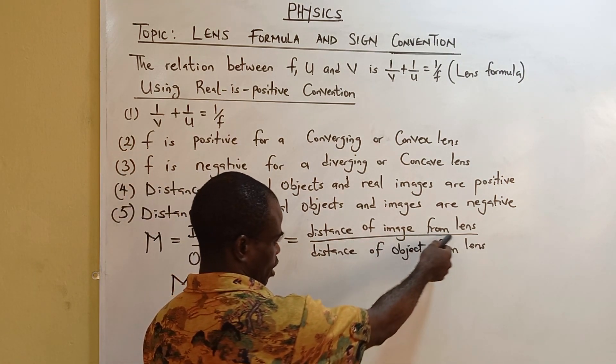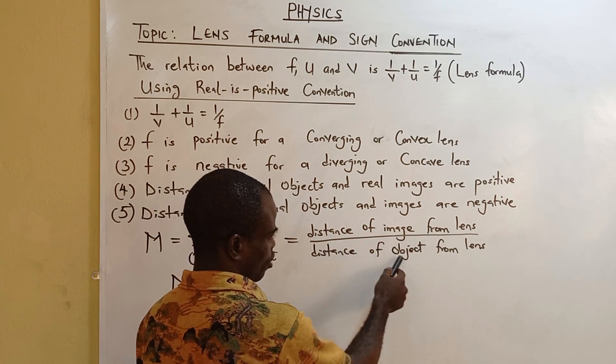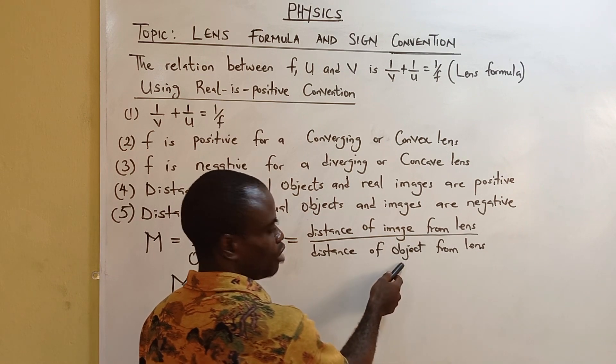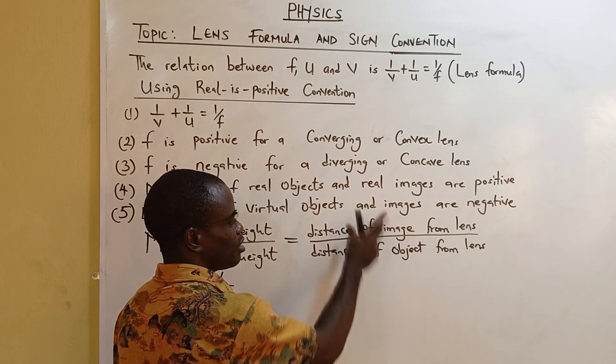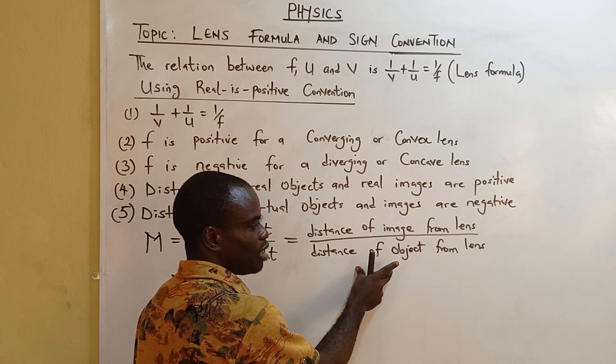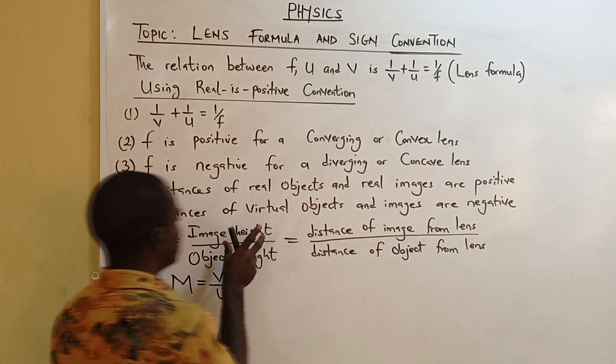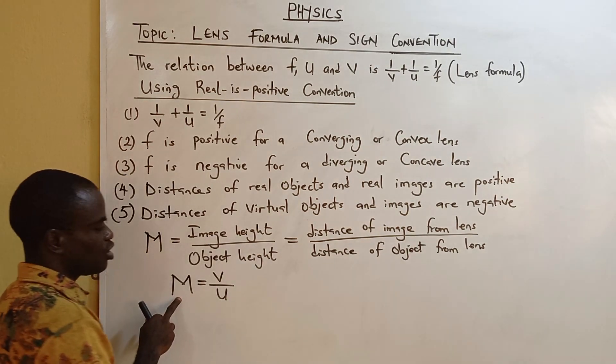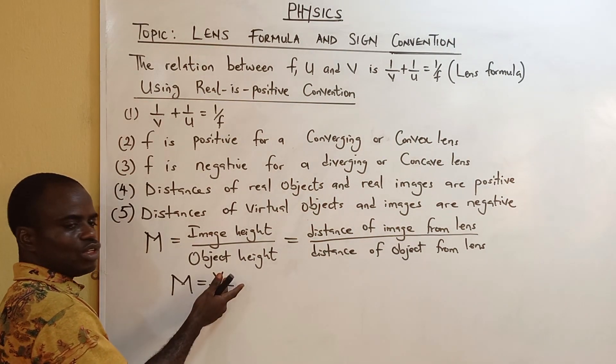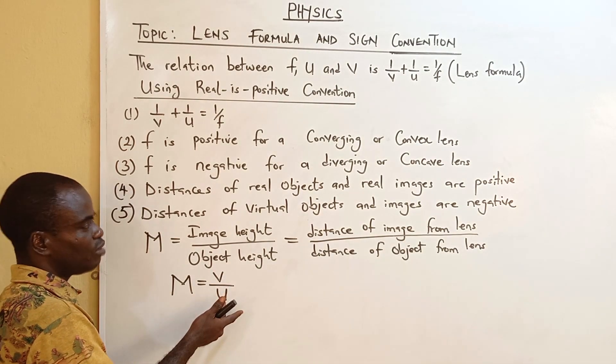Distance of image from lens in the numerator, distance of object from lens in the denominator. And don't ever make mistake of taking distance of object in the numerator and distance of image in the denominator. Image height comes before object height. Magnification is image distance over object distance.